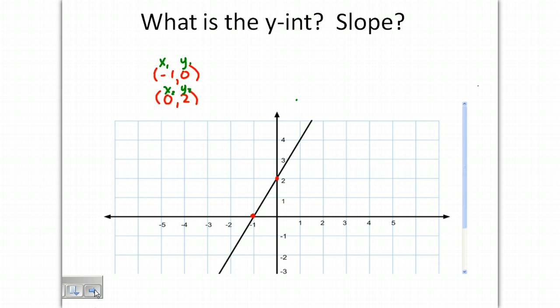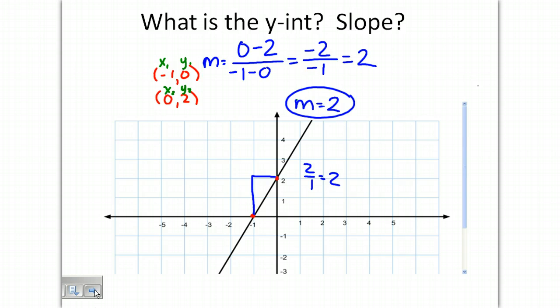So we're going to write 0 minus 2 divided by our x's, negative 1 minus 0. So then we get negative 2 divided by negative 1, which is 2. So our slope m will equal 2, just like we got when counting our rise, 1, 2, over our run, 1. So it works both ways.